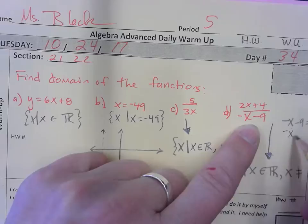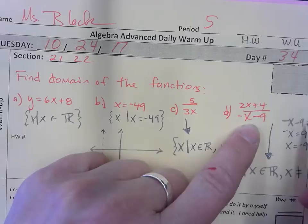So one way, remember, to do this is to just set this equal to zero, right? So I would solve this, and I get negative X equals 9, which means X has to equal negative 9, but actually it can't equal that.